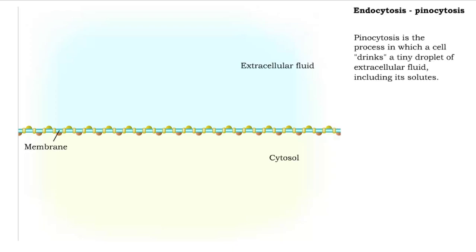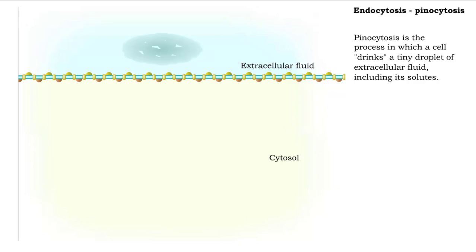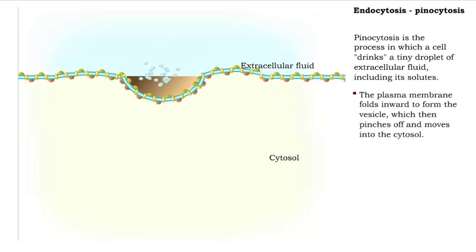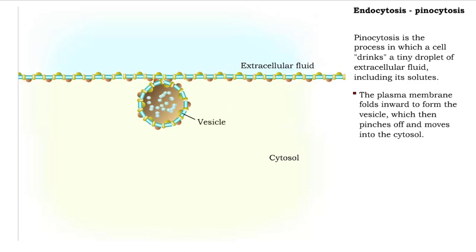Pinocytosis is the process in which a cell drinks a tiny droplet of extracellular fluid, including solutes. The plasma membrane folds inward to form the vesicle, which then pinches off and moves into the cytosol.